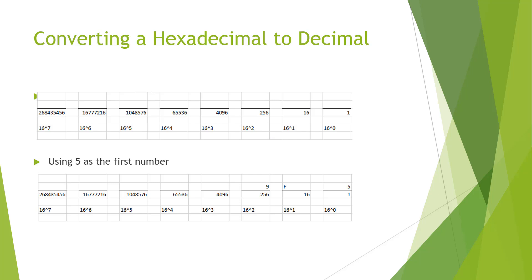16 to the power of 1 is 16. 16 to the power of 2 is actually 16 times 16, 256. 256 times 16 is 4096. 65,536, and so forth.